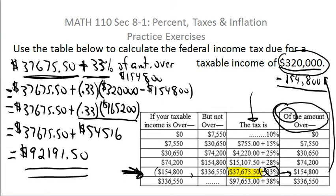So according to the tax tables, the federal income tax due for a taxable income of $320,000 is $92,191.50.